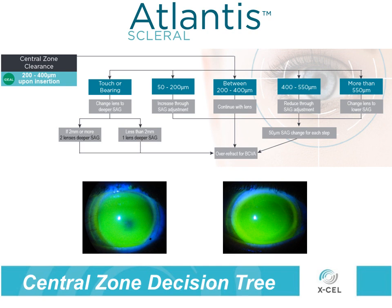In this flow chart provided in the fitting guide, the practitioner is instructed to find the diagnostic lens that comes closest to giving the desired tear reservoir height. From there, the CSA can be used to fine-tune the clearance to the practitioner's desired level. Note that if the 15.5 X lens cannot achieve a clearance within 200 microns of the desired goal, the L and C lenses can be used to increase or decrease the sag respectively.